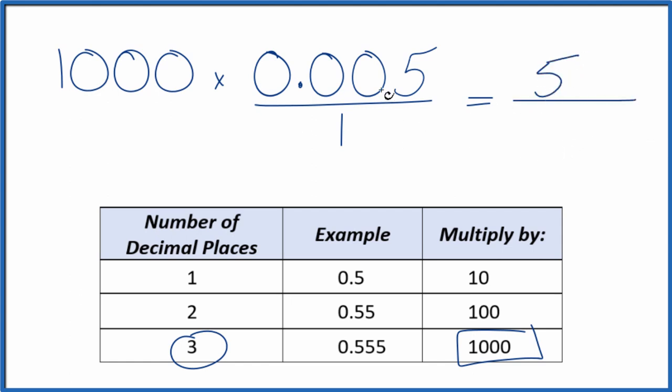But we can't just multiply the numerator by 1,000. We also need to multiply the denominator by 1,000. That's because 1,000 over 1,000 will give you 1. So we're multiplying this by 1. We're not changing the value, just the way it's represented.